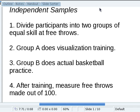Now let's talk about the t-test with independent samples. We're going to do the basketball experiment, but this time instead of one group that's tested before and after, we're going to divide our participants into two groups who have equal skill at free throws. Group A is going to do the visualization training. Group B is going to actually practice doing free throws. And then after training we're going to measure how many free throws they can make out of 100.